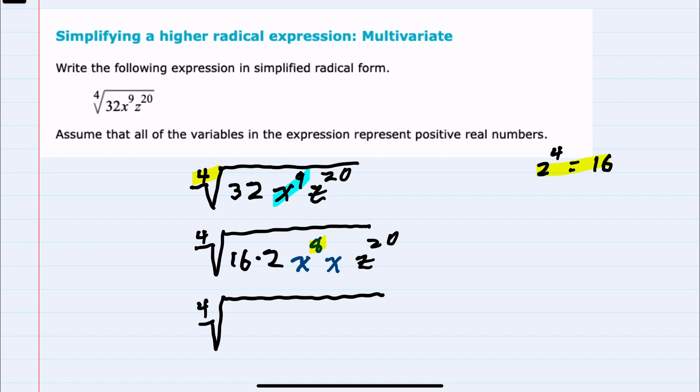Continuing to simplify, we said that 16 is 2 to the fourth power. So 2 to the fourth is 16 times the other 2, x to the eighth times x.